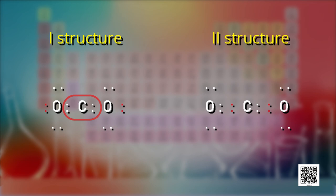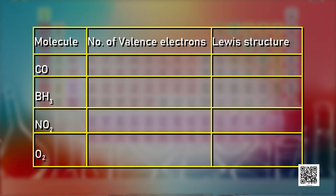That's how you can draw Lewis structures of various molecules. Keep practicing! Here is a worksheet for you to complete. In one column you have molecules; in the second, count and write the number of valence electrons; in the third, draw the Lewis structure. Try drawing Lewis structures for carbon monoxide (CO), BH3, NO3, and oxygen.